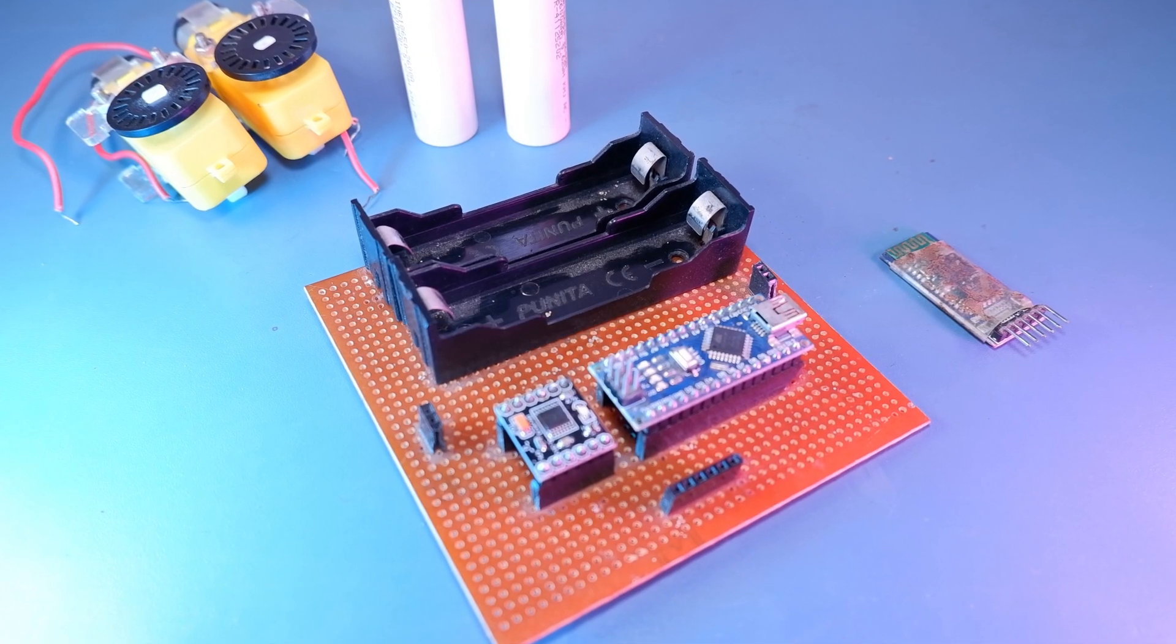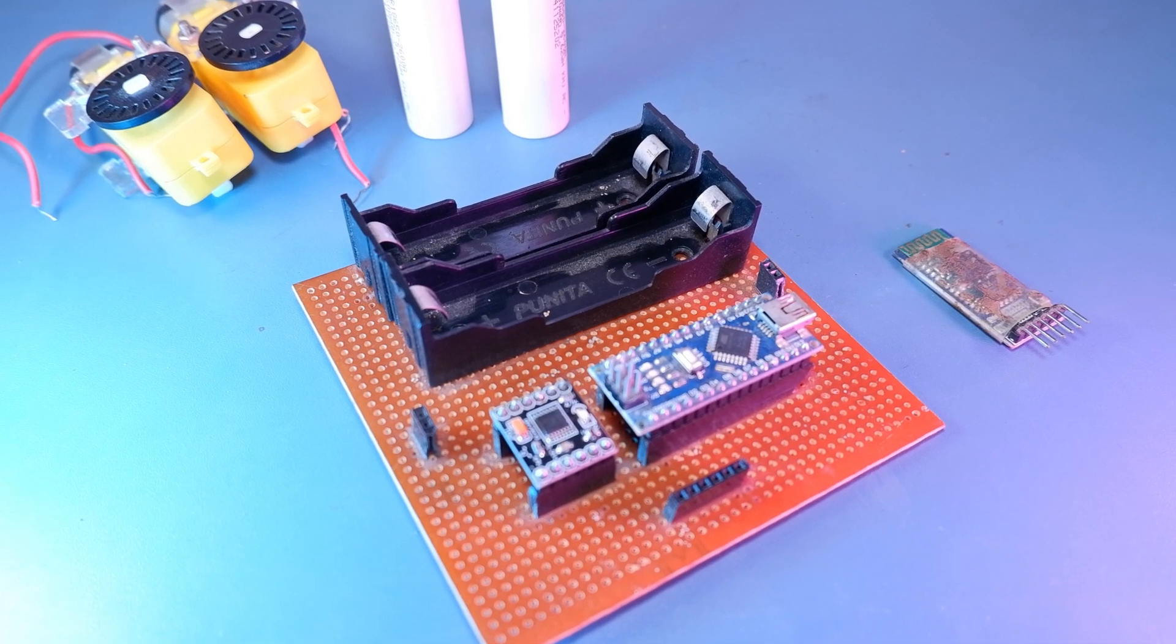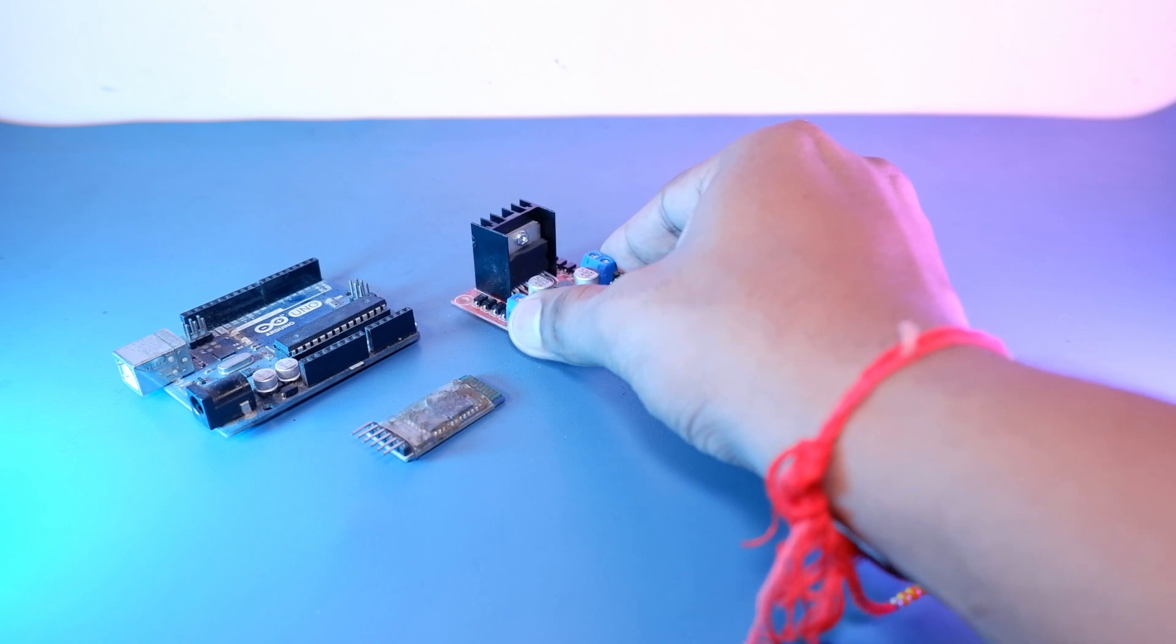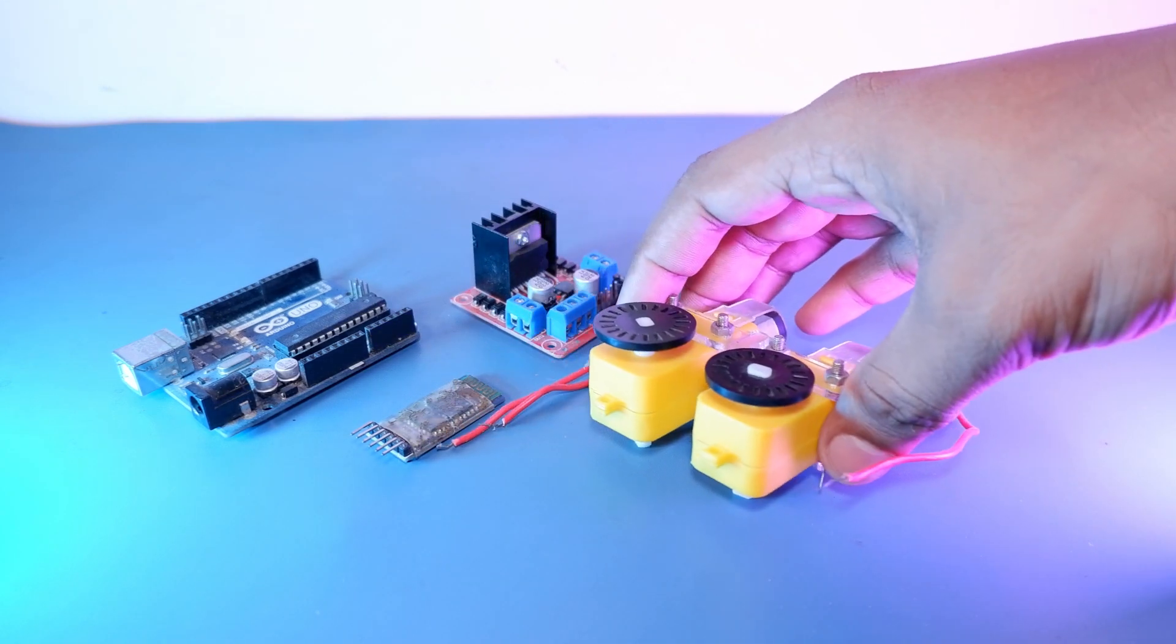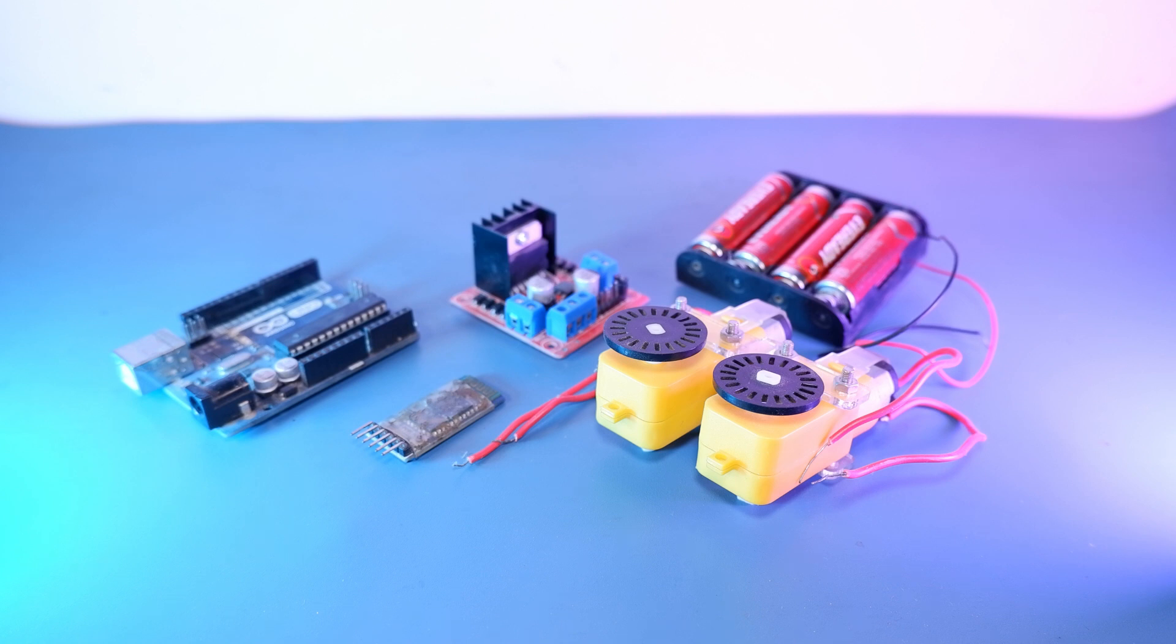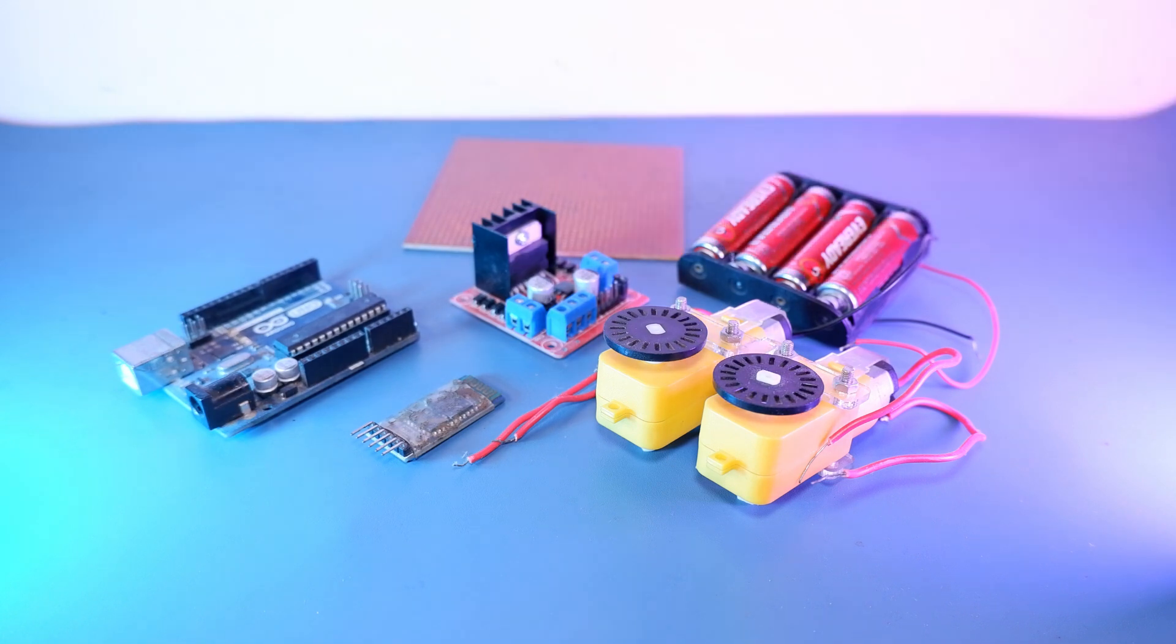So I thought of making my RC robot car PCB and the basic components I wanted to use is an Arduino, a Bluetooth module, a motor driver, two motors and a battery for power. But these are not the best components to make your RC robot car on a single PCB.